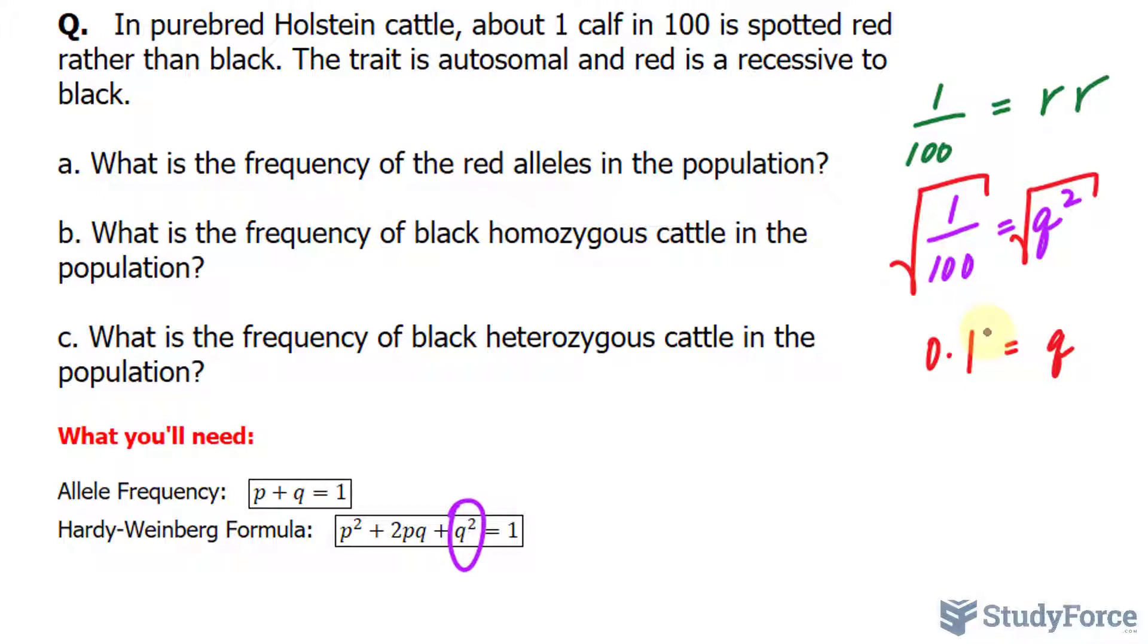What is the frequency of black homozygous cattle in the population? To find out, again, we'll be referring to the Hardy-Weinberg formula, shown right there. And specifically, this term p squared is used to calculate the frequency of homozygous individuals. So I'll take p squared, and I need to substitute the value of p. Again, this term is for capital R, capital R.